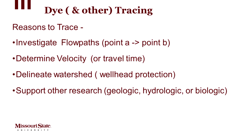So we investigate flow paths, understand how fast water moves, and also use tracing for what we call wellhead protection — protecting our water supply by understanding where our watershed is. On the surface, identifying a watershed is straightforward, but in the subsurface it's less obvious; caves or sinkholes might even cross surface watershed boundaries. We also do tracing to support geologic, hydrologic, and biological research — studying ecosystems, animal movement, or plant water sources.